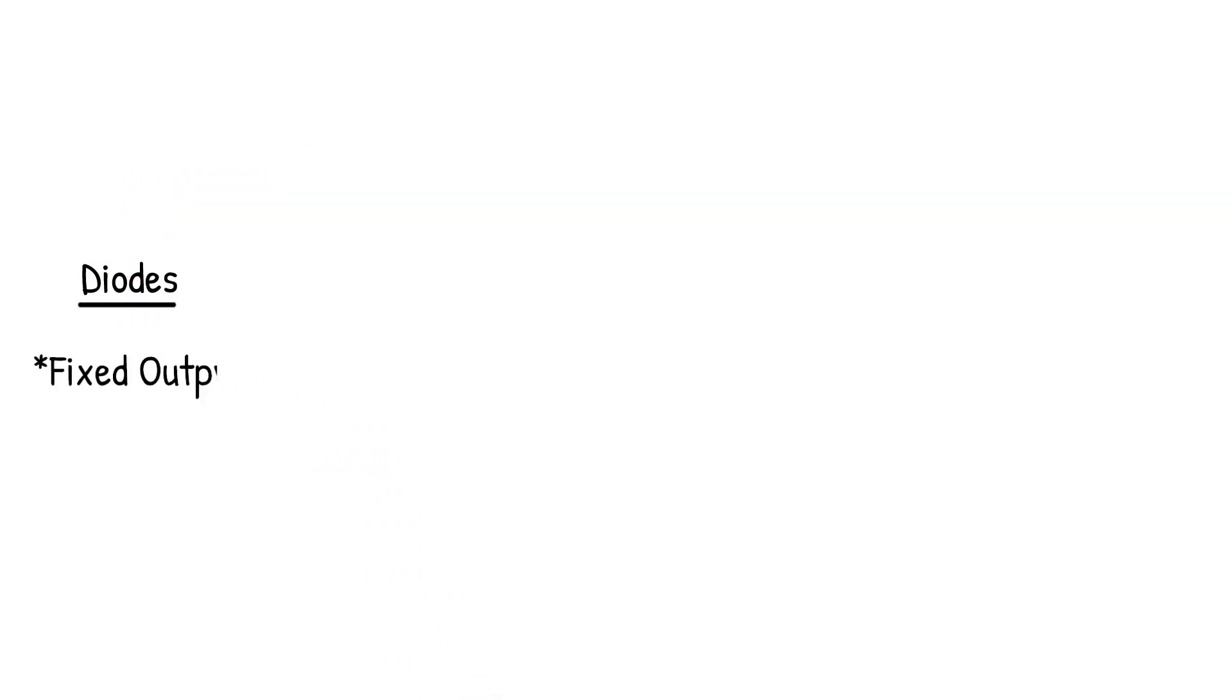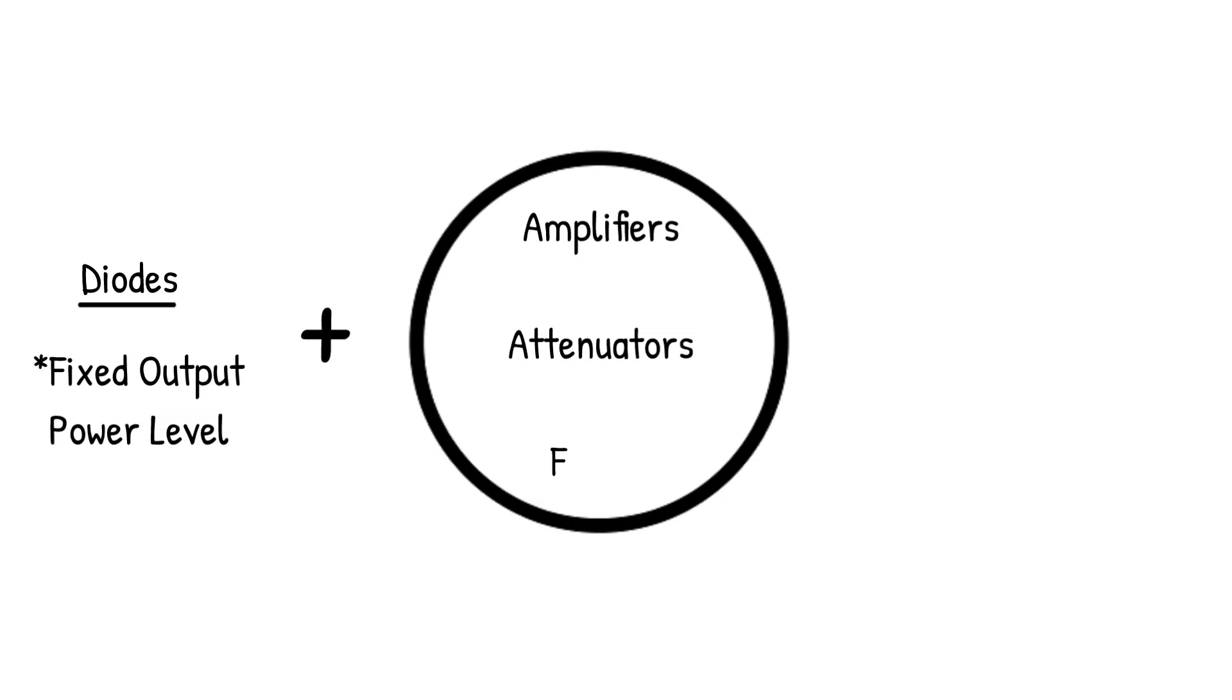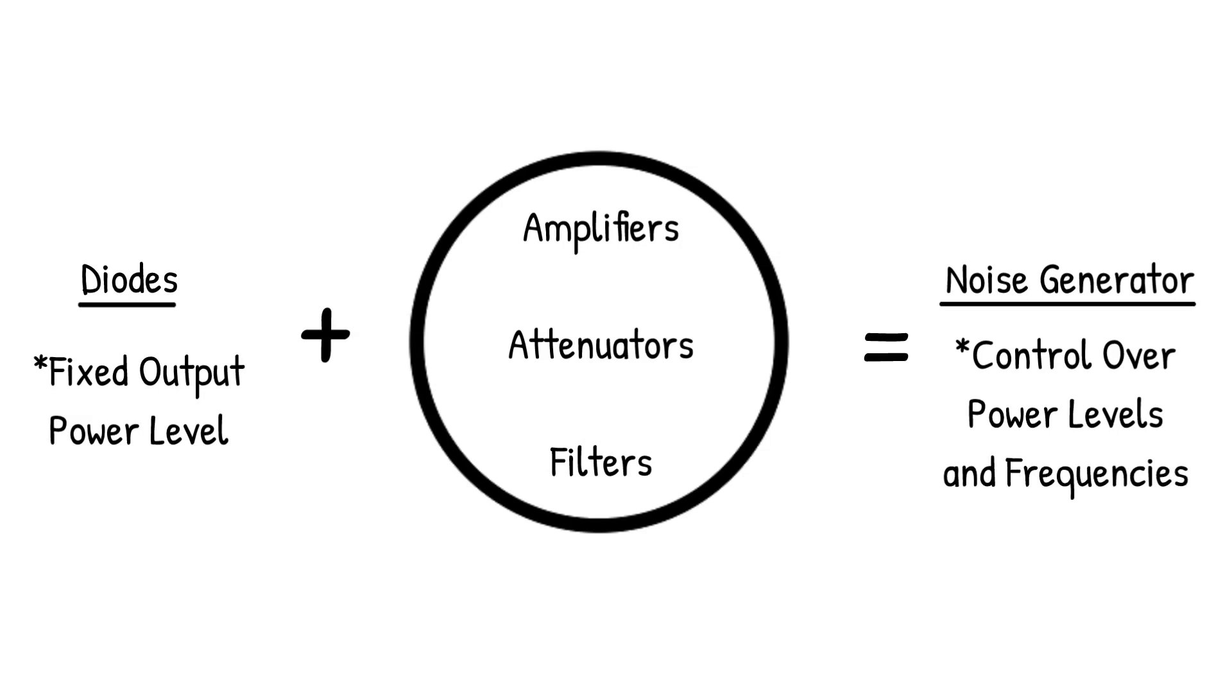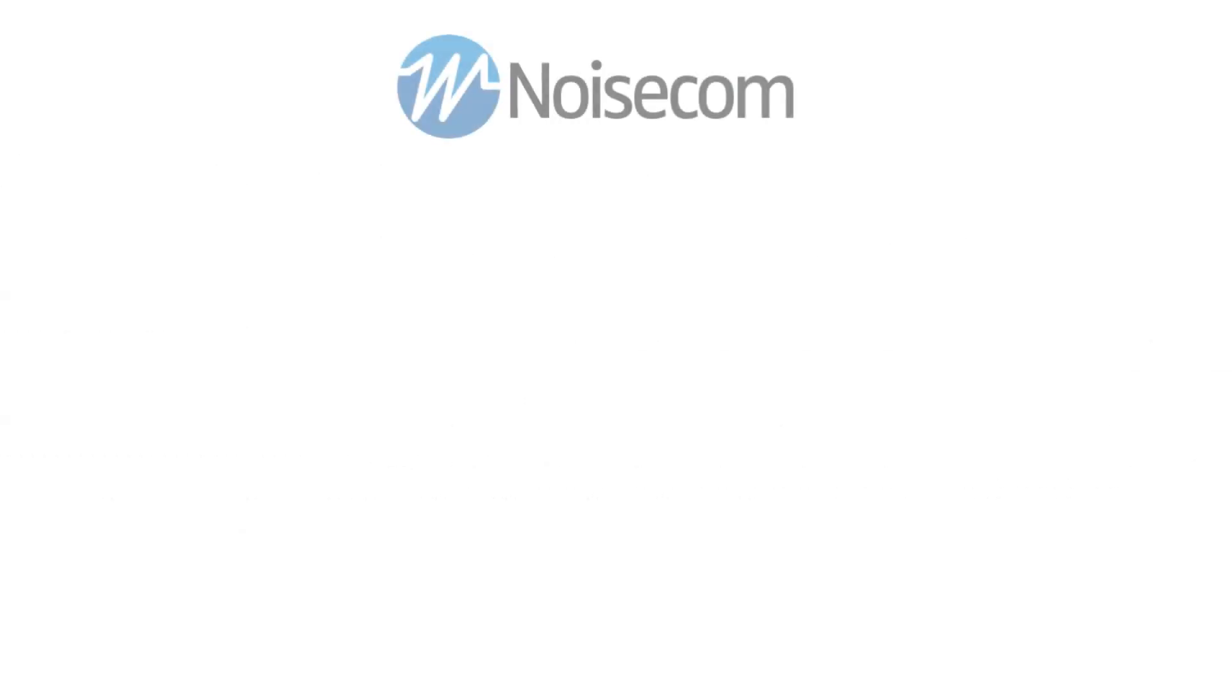Noise diodes produce a fixed output power level. However, when combined with amplifiers, precision attenuators, and filters, they become controllable devices for generating AWGN with specific power levels and frequencies. For over 30 years, Noisecom has been designing noise generation devices and instruments.